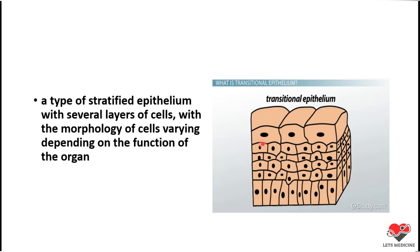For example, when the organ is in a stretched state, the epithelium or the cells of epithelium will become flattened. While when the organ is in a relaxed position, then the epithelial cells will have their dome-like cuboidal or columnar shape.